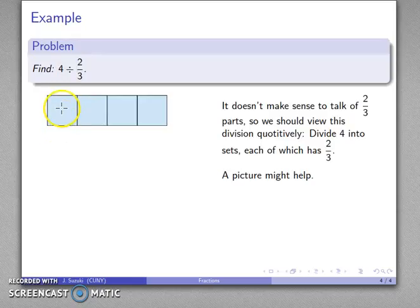If this is one, then to form two thirds I'm going to break that one up into three pieces and take two of them. So there is a two thirds.